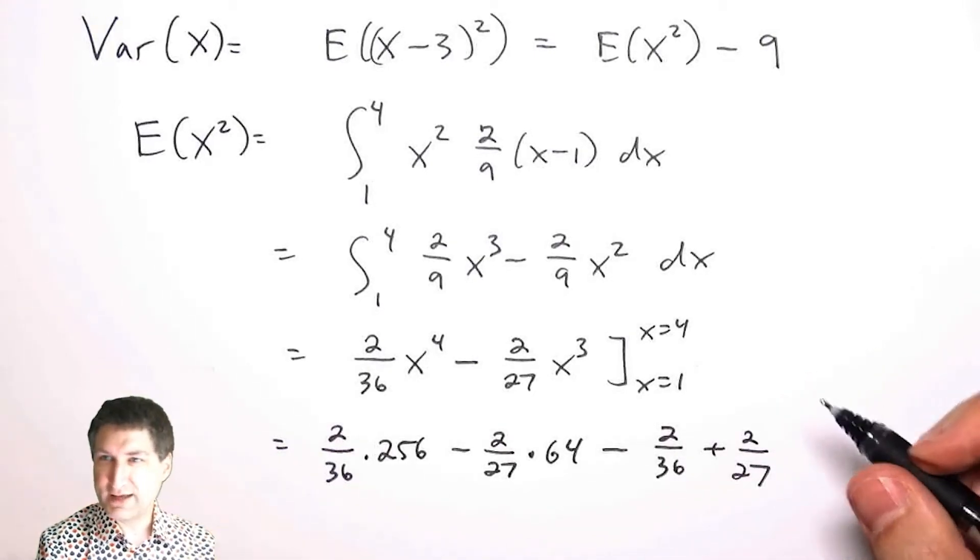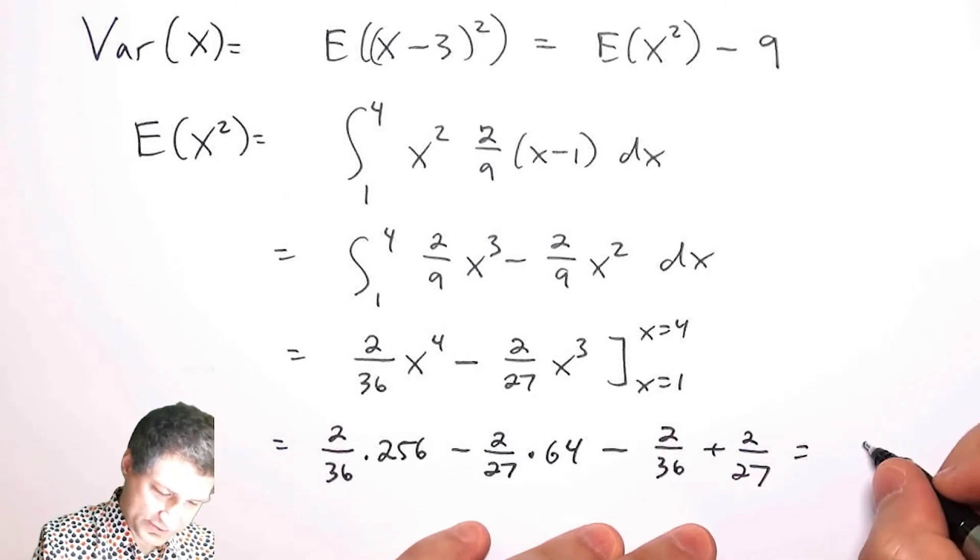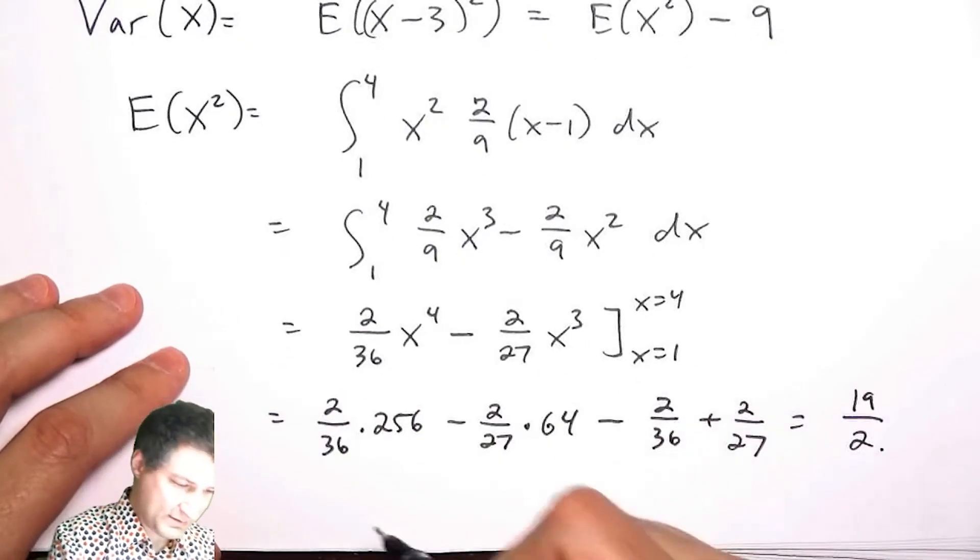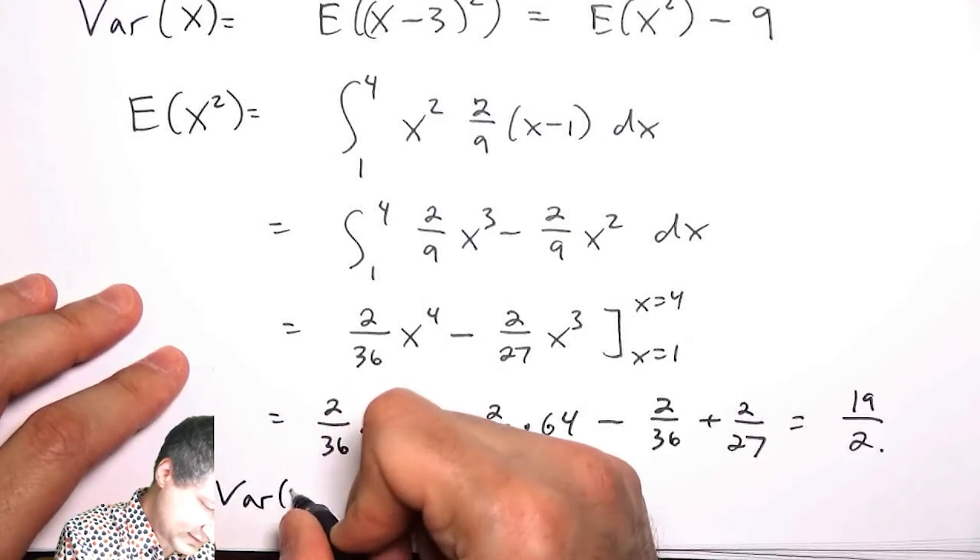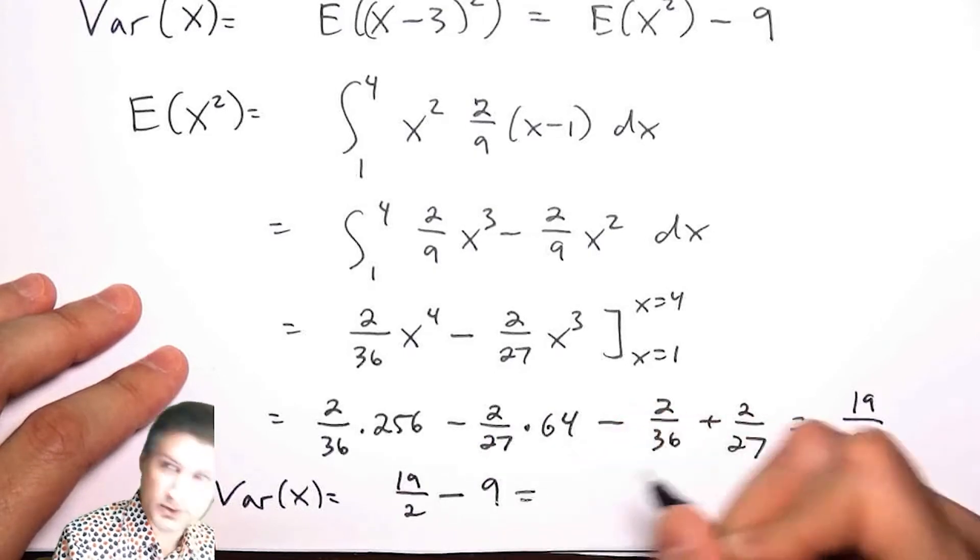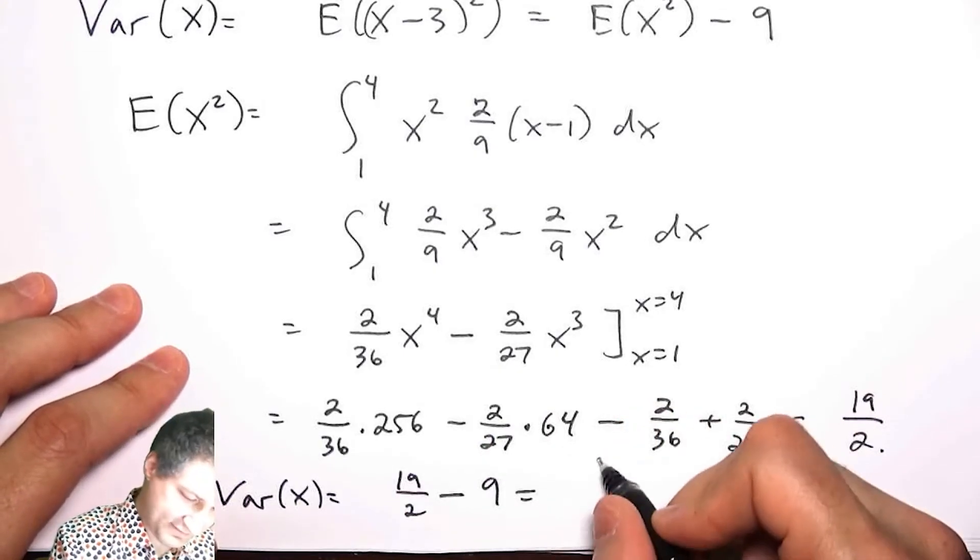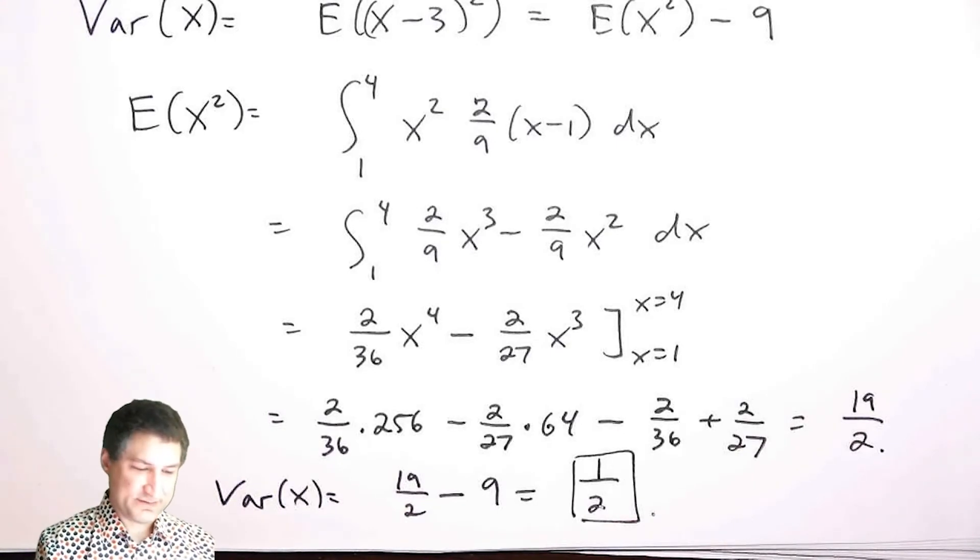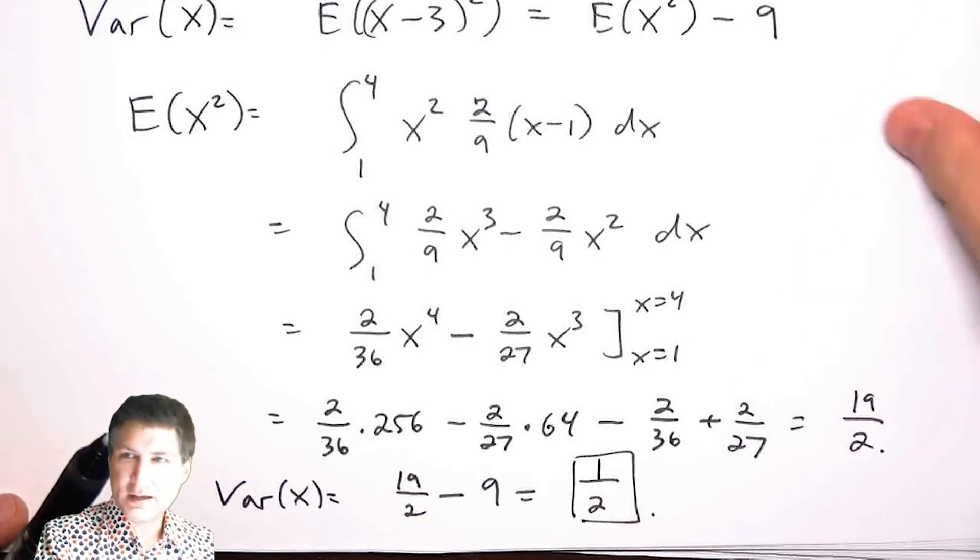I would work all that out and get the answer, which I'm cheating to tell you is 19/2. So Var(X) is 19/2 - 9, which is just 1/2. I don't think it's important for me to do the algebra—that's not that exciting to watch—but you get the sense of what the process is like.